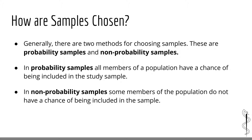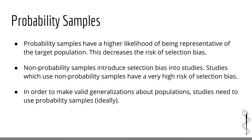Generally, there are two main types of samples: probability samples and non-probability samples. In a probability sample, all members of the population have a chance of being included in the study sample. In a non-probability sample, some members of the population have a 0% chance of being included in the study. Probability samples have a higher likelihood of being representative of the target population, which decreases the risk of selection bias. For this reason, probability samples are considered superior to non-probability samples.